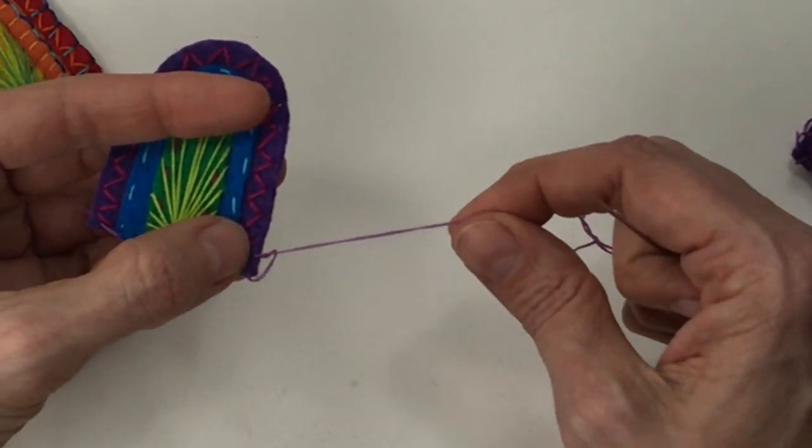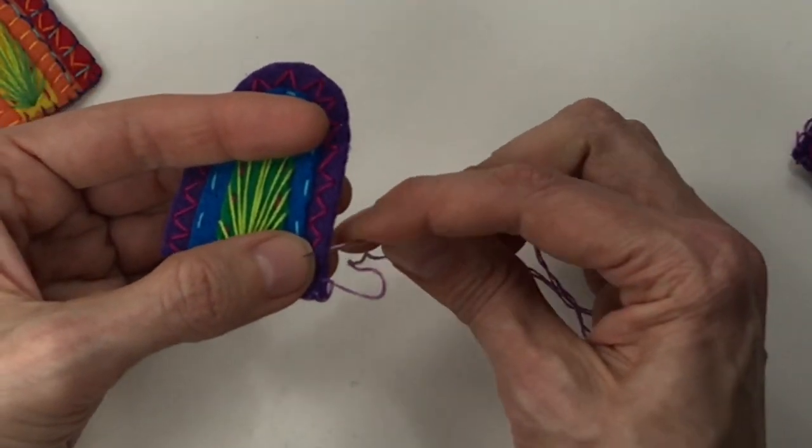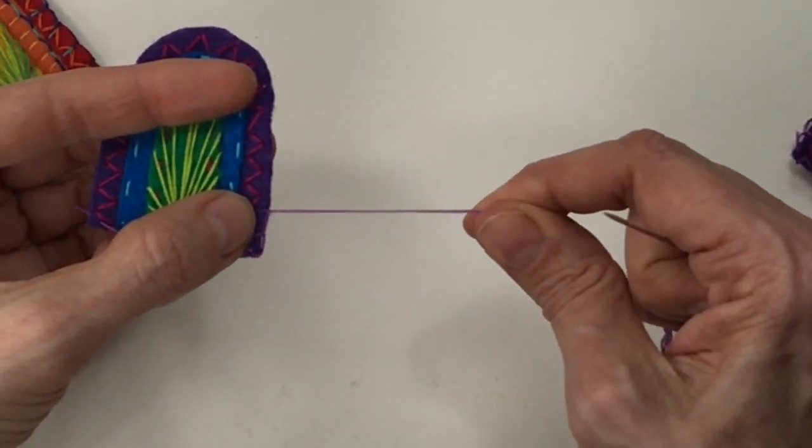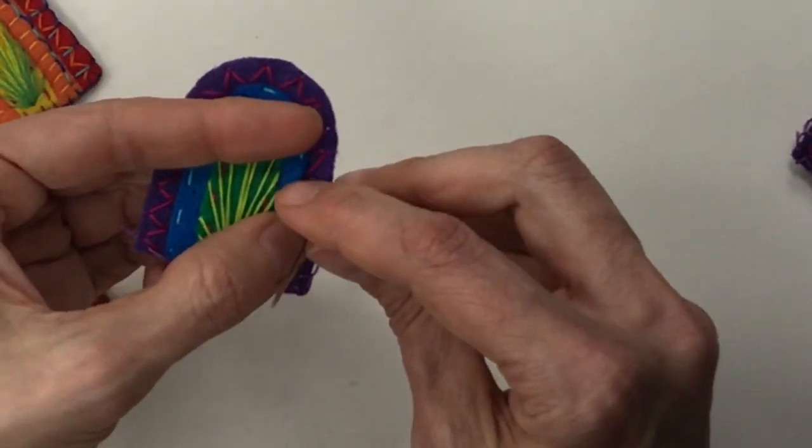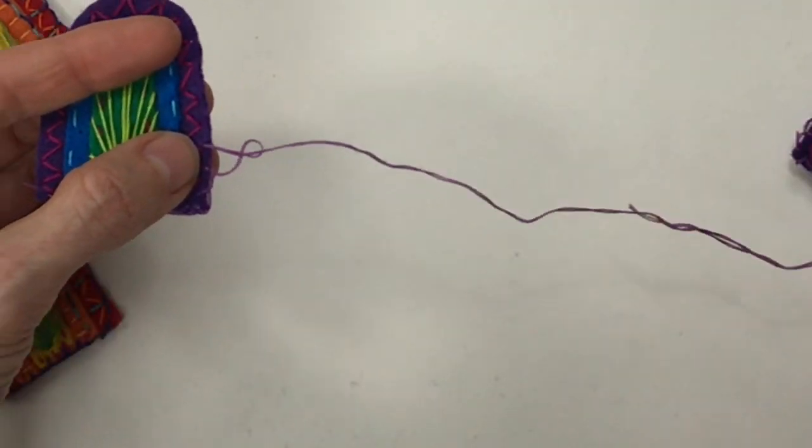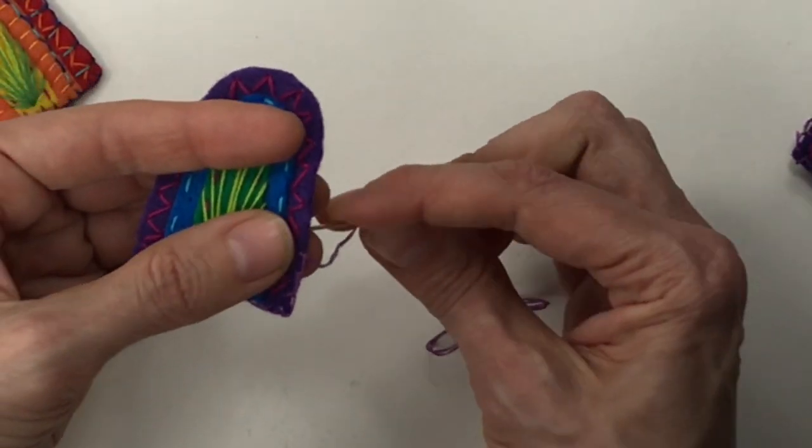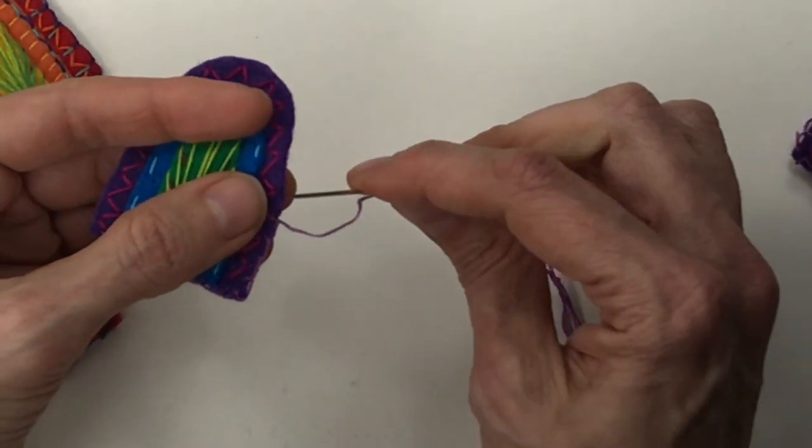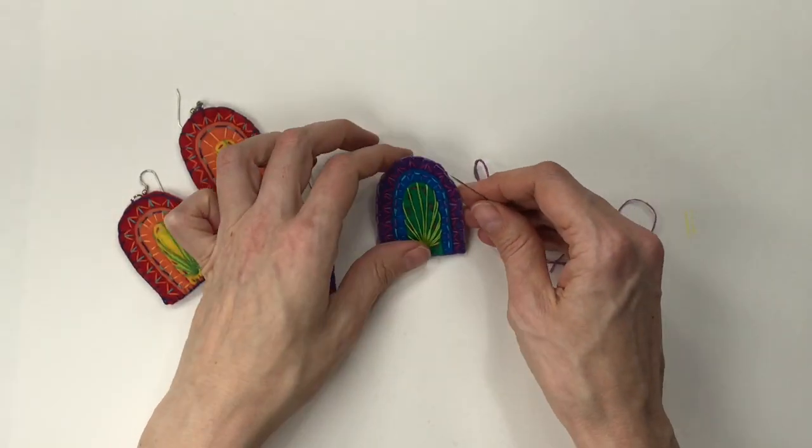With embroidery, nobody's going to be getting all that close anyway, so if you make a couple of stitches that aren't pretty, aren't perfect, don't let yourself get hung up on that stuff. If people are that close to you, you need to tell them to back off if they're up and close and pointing out your boo-boos. Have they made embroidery earrings that look as amazing as you? I don't think so.